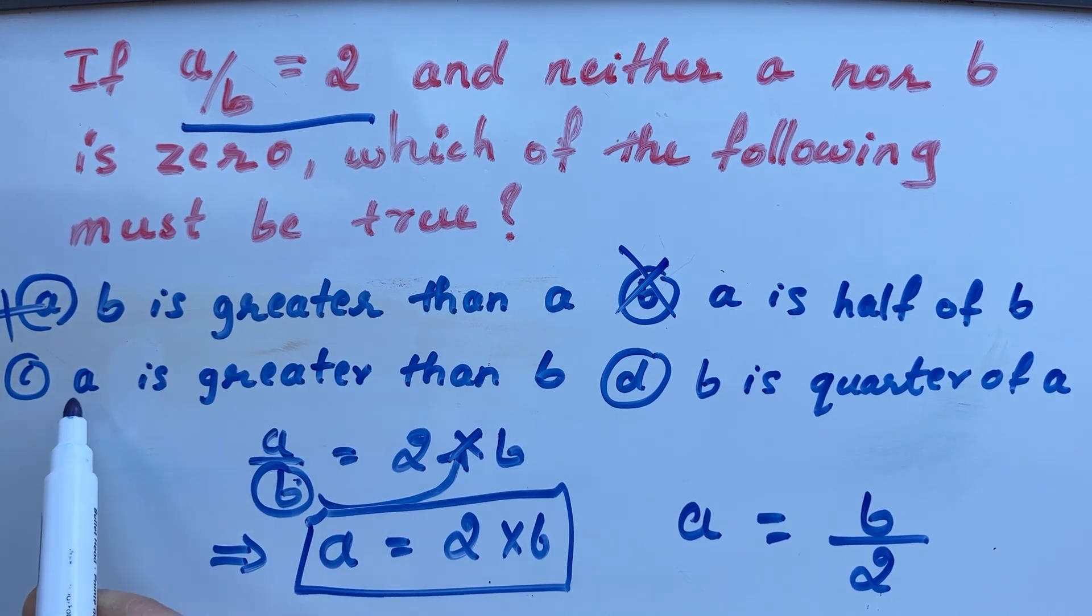Third option, A is greater than B. A is equal to 2 times B. That means A is greater than B. So third option is the correct option. You can look at the fourth option also.